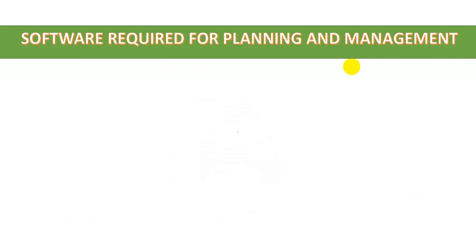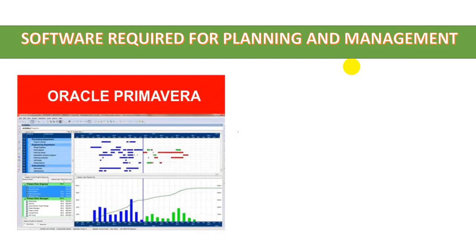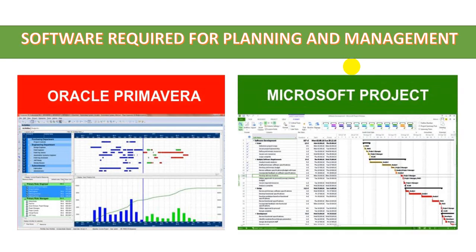Next, software required for planning and management — because before starting every project it is very essential to plan and manage. The most used software is Primavera, which is the most-used project planning software. After that, Microsoft Project is also a good software for project planning and management. As a civil engineer, project planning and management is very important for scheduling, cost, and calculating start and finish times of a project.